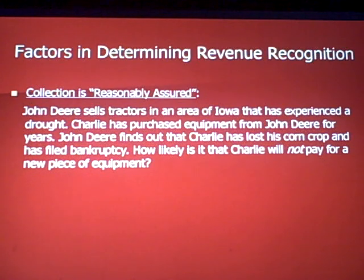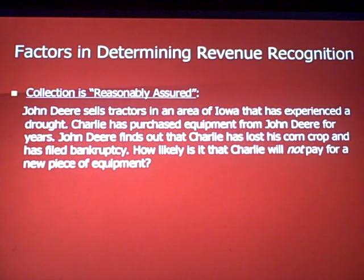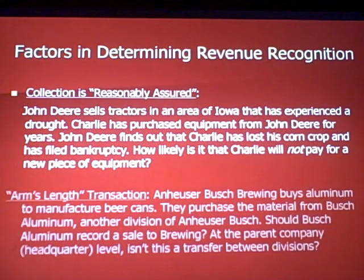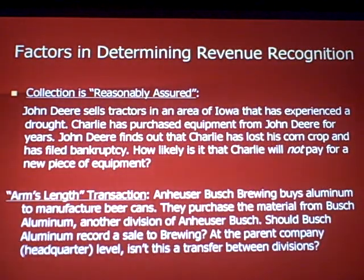Another factor is collectibility — is the person you're delivering a product or service to actually going to pay you? John Deere sells tractors in an area of Iowa that experienced a drought. Charlie, a longtime customer, has purchased equipment from John Deere for years, but John Deere finds out Charlie has lost his corn crop and filed for bankruptcy. If you don't think you're going to get paid, you really shouldn't record the revenue.